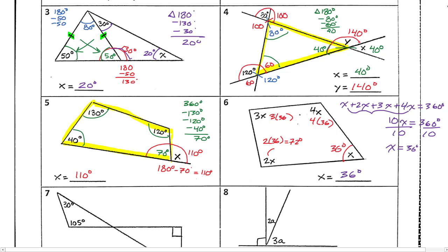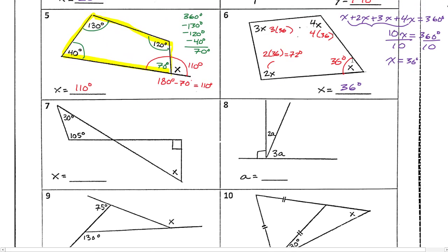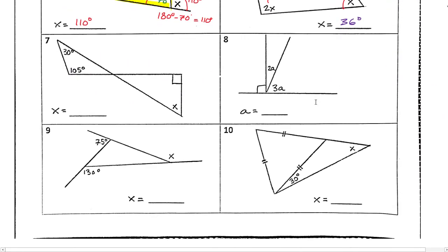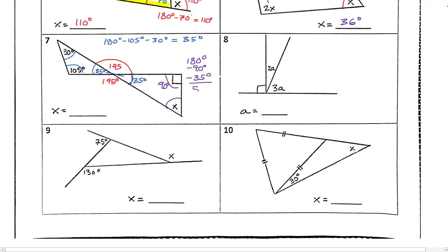Number 7 is two triangles attached — similar to an earlier question. Take 180 minus 105 minus 30, which is 180 minus 135, giving 35 degrees for this corner. By opposite angles, this is also 35 degrees. Then in the second triangle, there's a 90-degree box in the corner. Take 180 minus 90 minus 35, and we get 55 degrees for x.